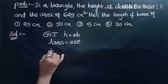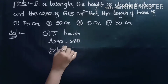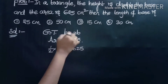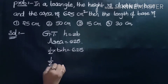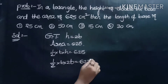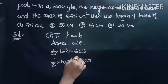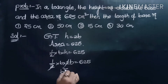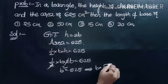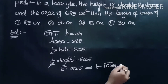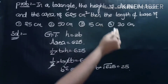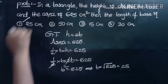Using the area formula: (1/2) × B × H = 625. Substituting H = 2B: (1/2) × B × 2B = 625, which simplifies to B² = 625. Therefore, B = √625 = 25. The length of the base is 25 centimeters.